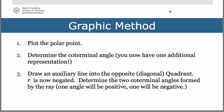There are two ways by which we can write the different representations of a single polar point. One way is to do it graphically. You can plot the polar point, and then you're going to determine the coterminal angle to that which you are given — that will give you one additional representation. Then you draw an auxiliary line into the opposite or diagonal quadrant, where r is now negated. You then determine two coterminal angles formed by that ray, one positive and one negative.